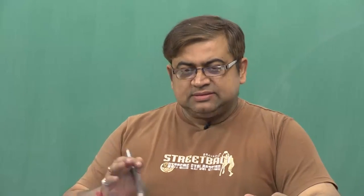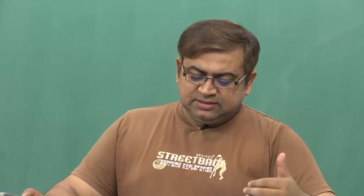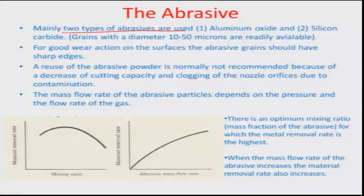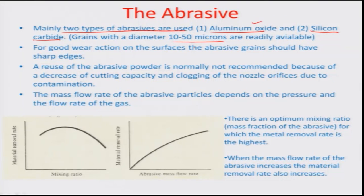Let us look individually at the different aspects of the AJM process and figure out how changes in parameters result in changes in process characteristics. There are two main types of abrasives used: aluminum oxide (Al2O3), which is very hard, and silicon carbide. Typically grains with a mean diameter of 10 to 15 microns are deployed and are commercially available for abrasive jet machining or abrasive water jet machining, where a slurry of abrasive and water is used instead of air as the throwing medium.